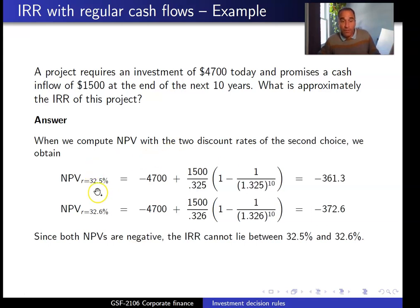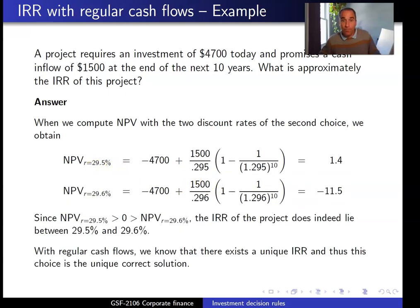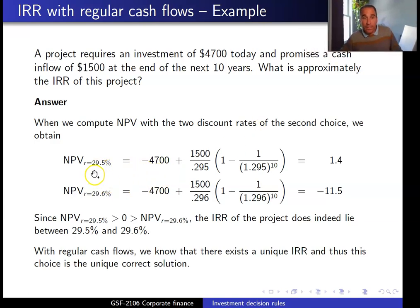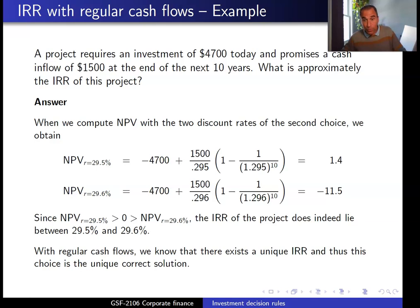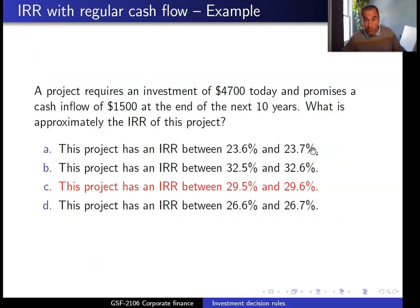Trying 29.5% and 29.6%: the NPV at 29.5% is positive and the NPV at 29.6% is negative. Therefore, the internal rate of return of this project lies between 29.5% and 29.6%. The correct answer is C — the IRR is between 29.5% and 29.6%.